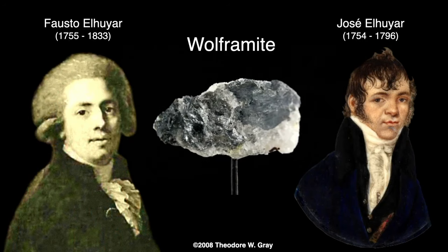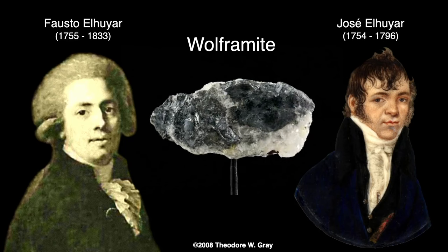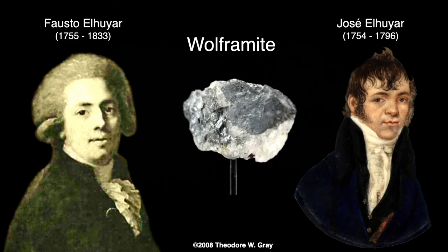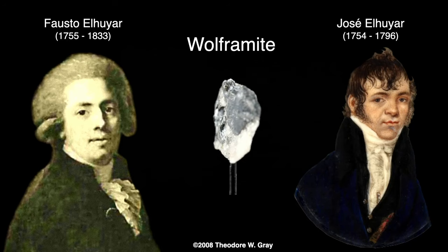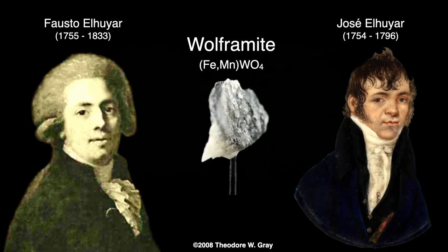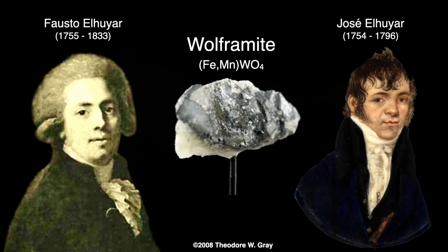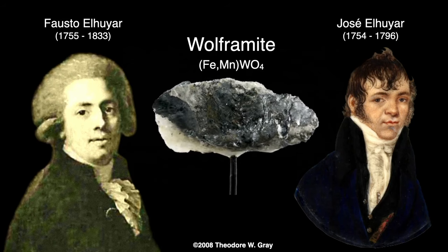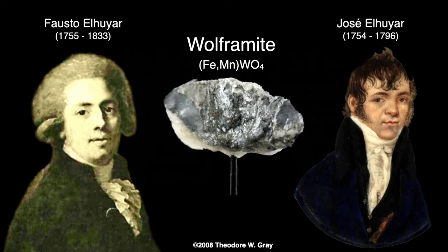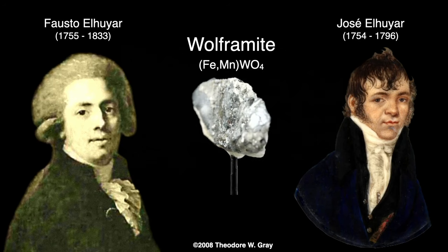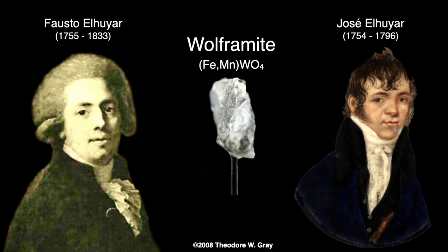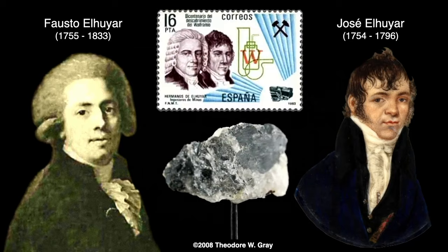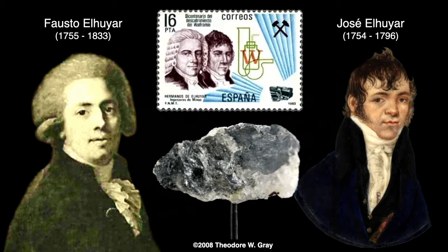two brothers, Fausto and José Eluyar, produced an identical acid from a different mineral, wolframite — an iron manganese tungstate. They were able to reduce the acid with charcoal and obtained the actual metallic element. They, therefore, get the credit for the discovery of tungsten and eventually a postage stamp in Spain.